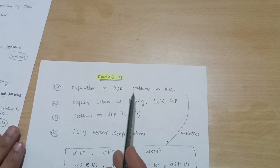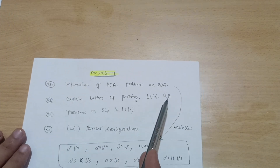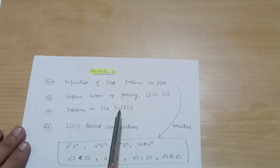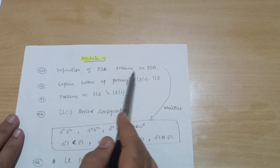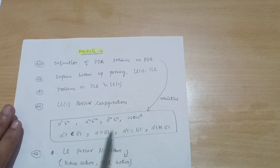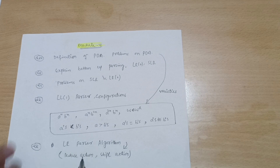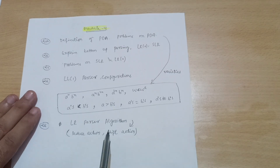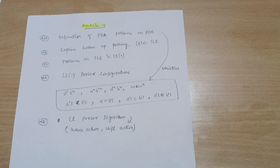Module 4: go through the definition of PDA and problems on PDA. Explain bottom-up parsing, LR(0) and SLR, and problems on SLR, LR(0), and LL(1) parser configurations. PDA problems include varieties like a-raised-to-n and b-raised-to-n. Also, the LR parser algorithm, which consists of reduce action and shift action — this is for those who want to score higher and should cover all the topics mentioned.